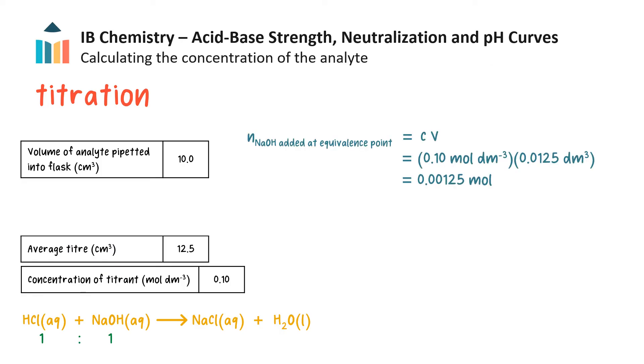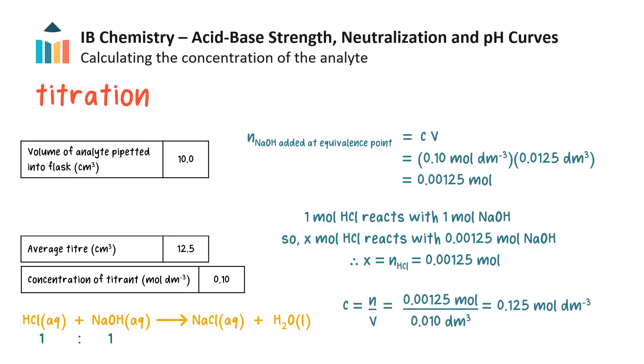After the titration, we can use this data to work out the concentration of the analyte. First, we take the volume of the titrant added and its concentration to calculate the number of moles added at equivalence point. Then, using the mole ratio from the balanced equation, we can determine the moles of acid which were initially added to the flask, which in this case is the same as the moles of base at equivalence point. Finally, from the moles of acid and the volume of acid pipetted, the concentration of the acid can be calculated.